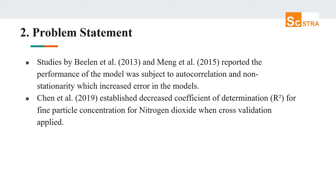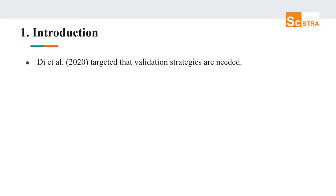Chen and his group in 2019 established a decrease in the coefficient of determination for fine particle concentration and nitrogen dioxide when cross-validation was applied, indicating that the model tended to overestimate. Also, in 2020, Dai and his group targeted that validation strategies are needed, demonstrating this by using a nitrogen dioxide machine learning prediction model with both cross-validation and external validation.